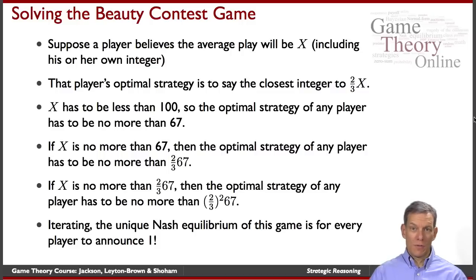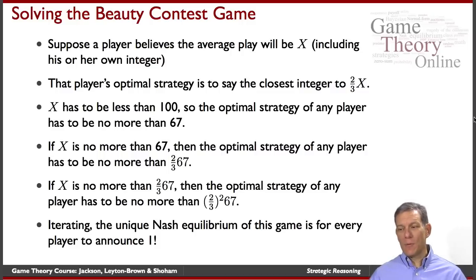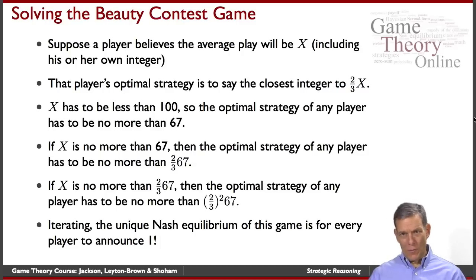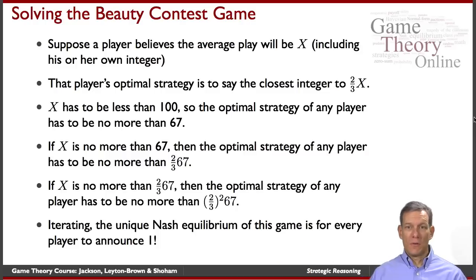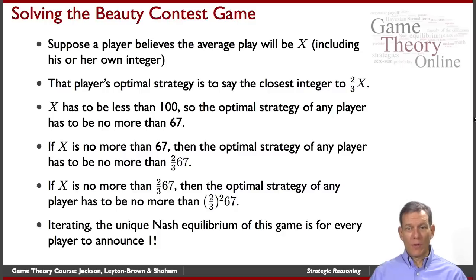We're driven all the way down to announcing one, and that's the unique Nash equilibrium. What happens now — we all announce one, we all tie, and somebody wins at random. So if I tried to deviate from that, if I tried to announce a higher integer, I'd just be higher than the average guess and I wouldn't be at two-thirds of the mean. So this is going to be a stable point.